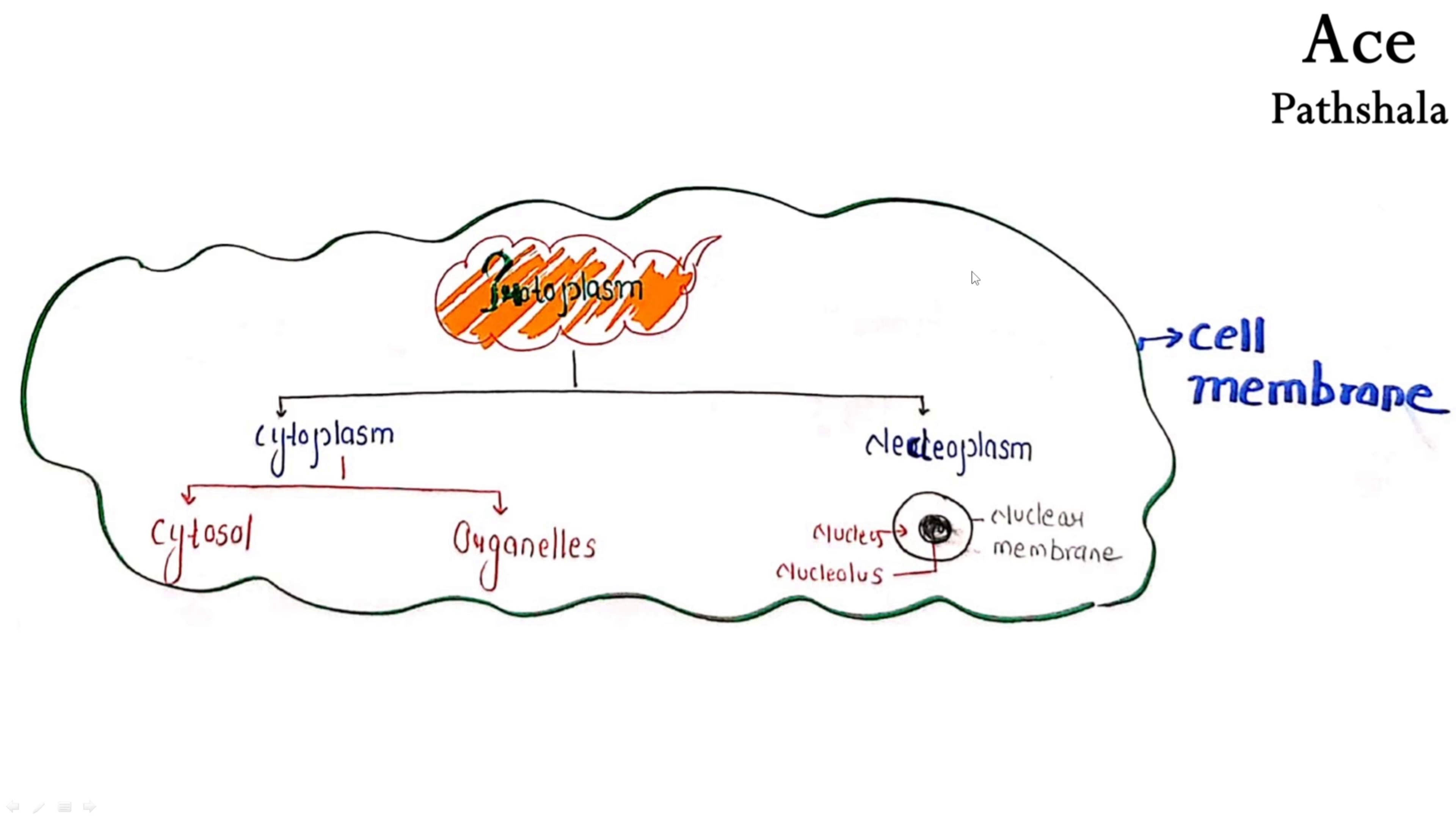Clear? To understand that, we will see this structure again. Just a quick review. This is a cell. And this is a membrane which is drawn on all sides.